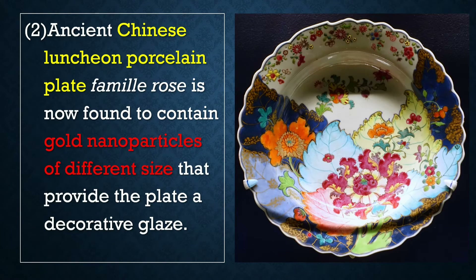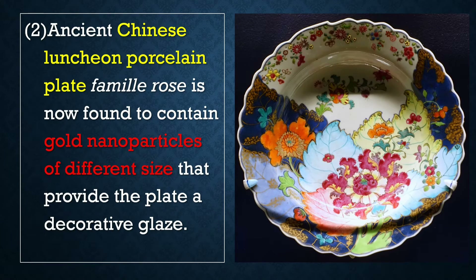You can see this Chinese Falangcai porcelain plate here — it is beautiful; the decorations and color shine so perfectly. That is all because of the gold nanoparticles used in these plates. So gold nanoparticles were used in ancient times in plates to make them more decorative, giving them a glaze so they would shine and look more beautiful.